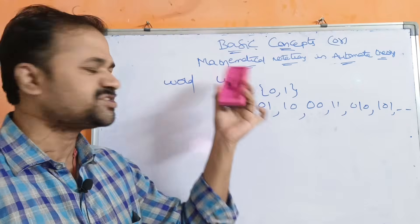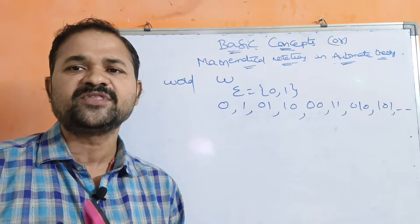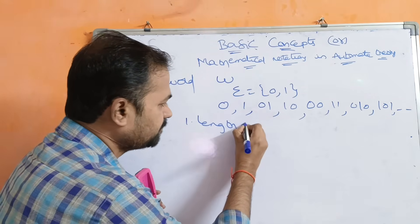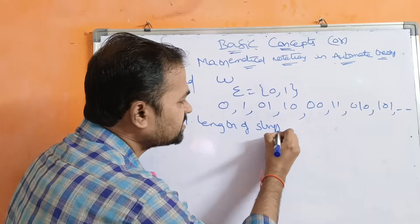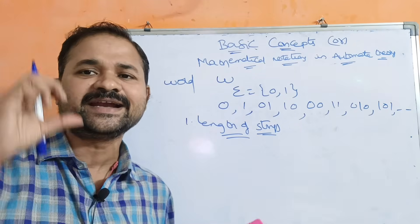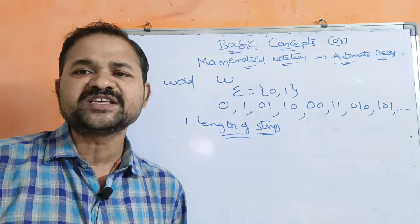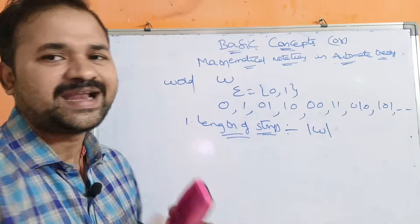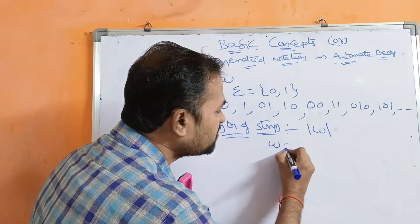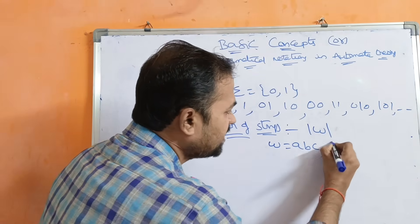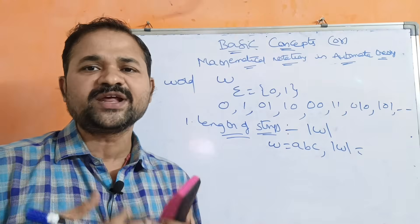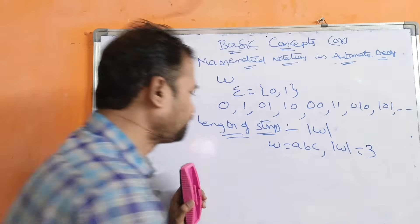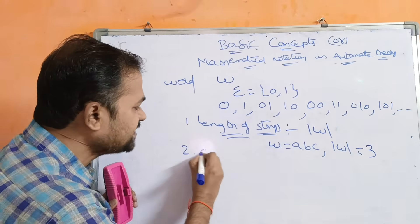Now let us see some basic operations performed on strings. The first one is the length of a string. Length means the total number of symbols present in the string, and it is denoted by |W|. For example, if W = ABC, then |W| = 3 because ABC contains three symbols.